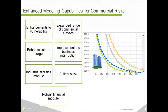We've comprehensively enhanced our storm surge model with the forthcoming Touchstone release, made improvements to business interruption, and on the earthquake side introduced a non-linear dynamic analysis to better reflect vulnerability of commercial risks. We've added an industrial facilities module, builder's risk so you can look at risk as a building is being constructed, and increased support for specialty risks such as marine cargo and civil infrastructure like bridges. AIR's robust financial module supports a broad range of policy terms spanning primary, excess, and reinsurance, with an integration-based methodology that accurately propagates uncertainty as terms are applied.